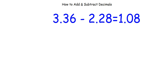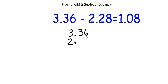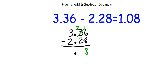We solved this problem and got 1 and 8 hundredths. There's another way to find the answer — lining up the decimals. I write 3 and 36 hundredths on top, line up the decimal, then 2 and 28 hundredths below. Drop the decimal down — it stays in the same spot. Here we borrow: this 3 turns into a 2 plus 1, giving 16 take away 8 equals 8. Then 2 minus 2 is 0, and 3 minus 2 is 1. The answer is confirmed: 1 and 8 hundredths.